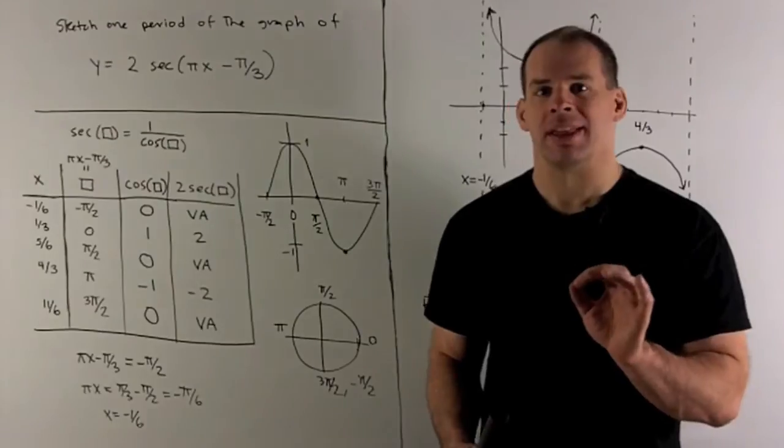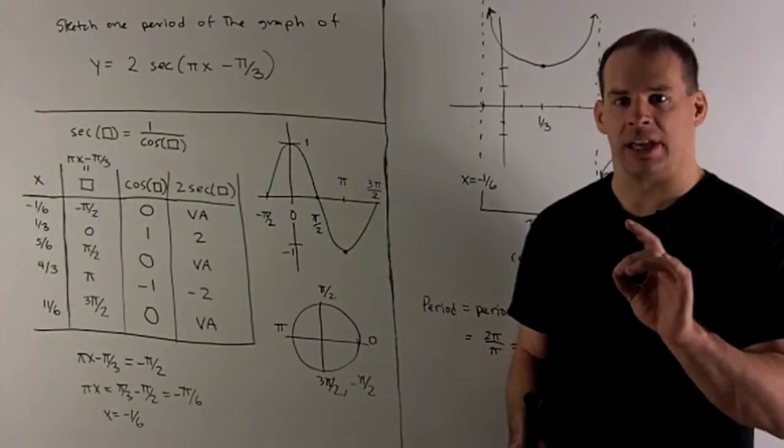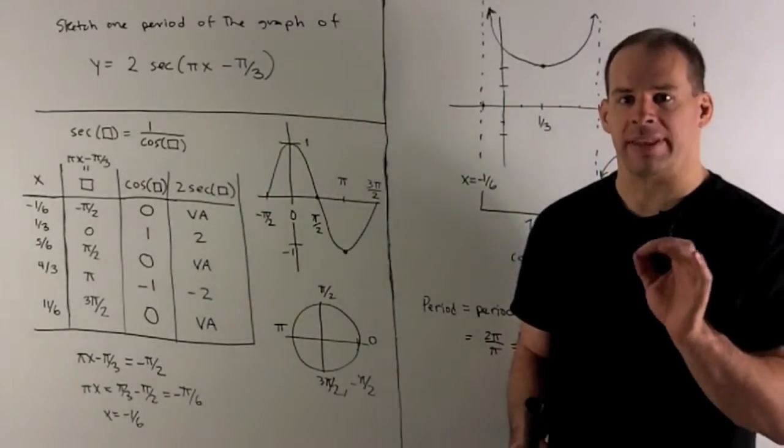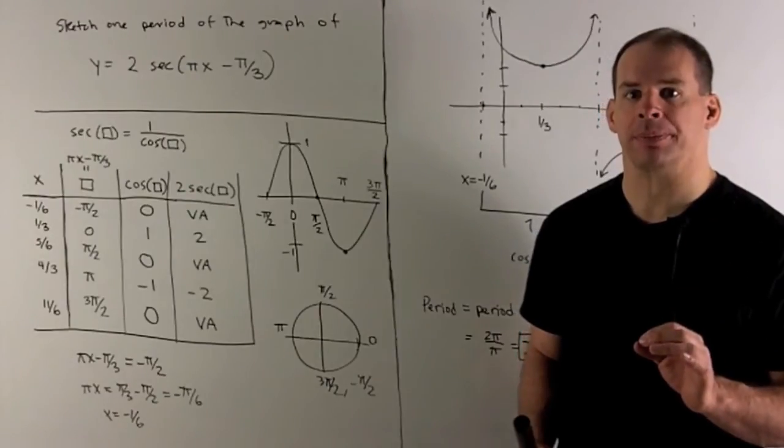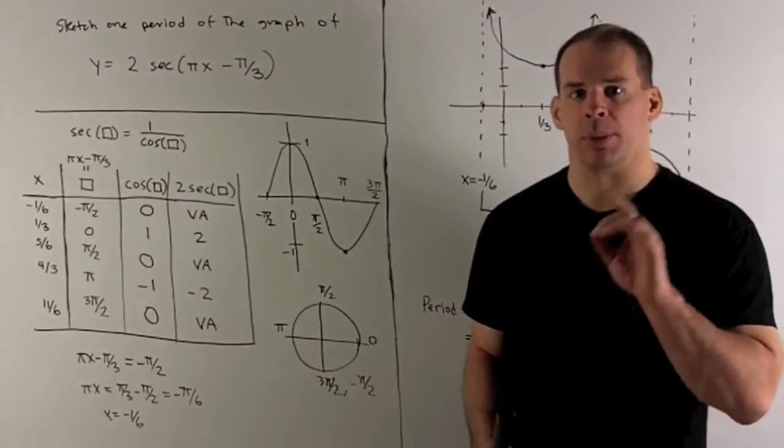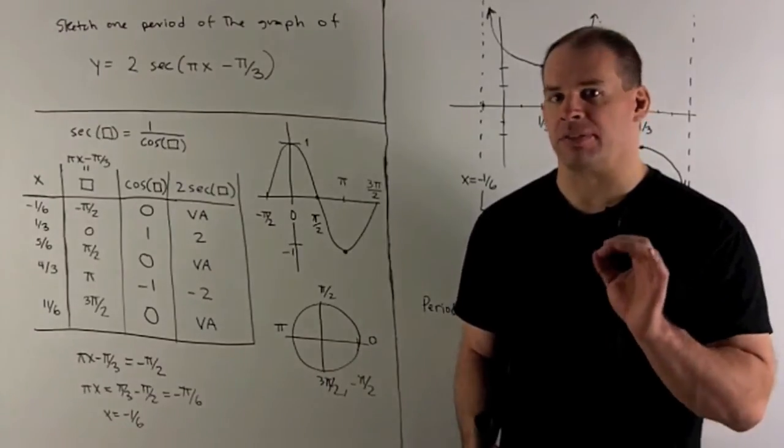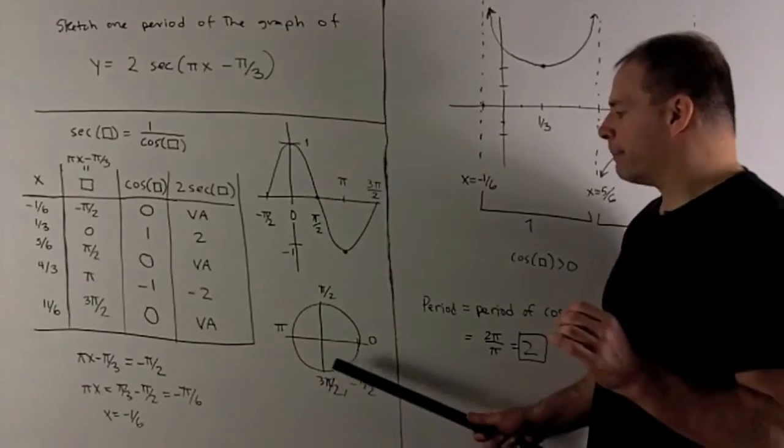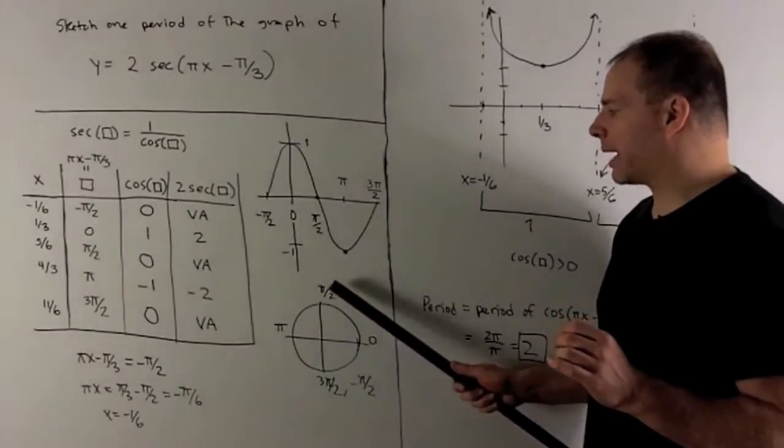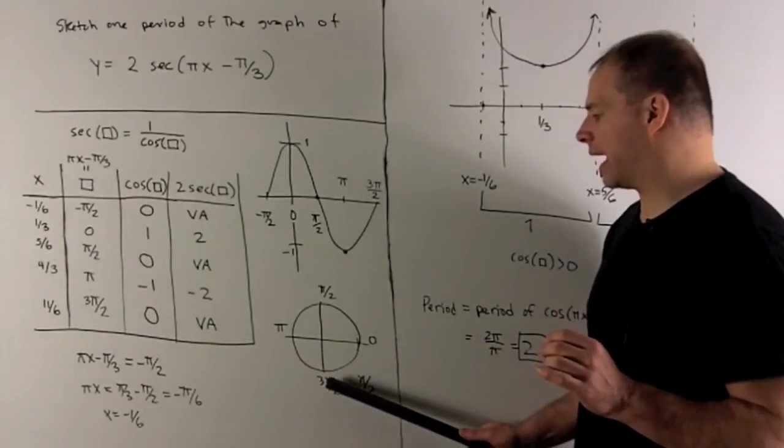Now cosine is defined as: we take our angle, look at the x-value on the unit circle, and that gives us the cosine. If I take the multiples of π, that'll be enough to give us the graph of cosine. I'm looking at -π/2, 0, π/2, π, 3π/2.